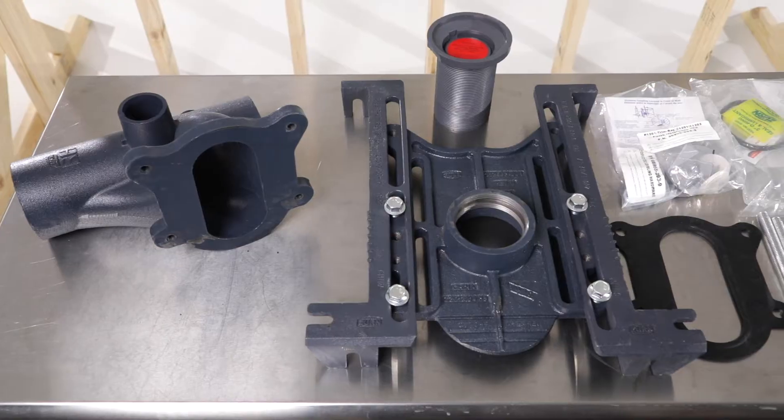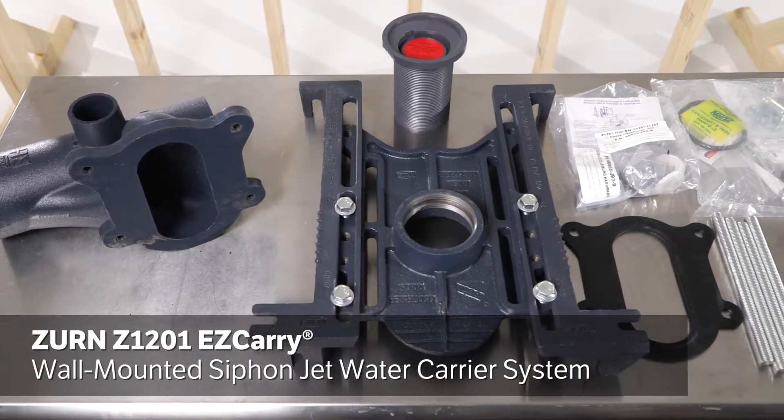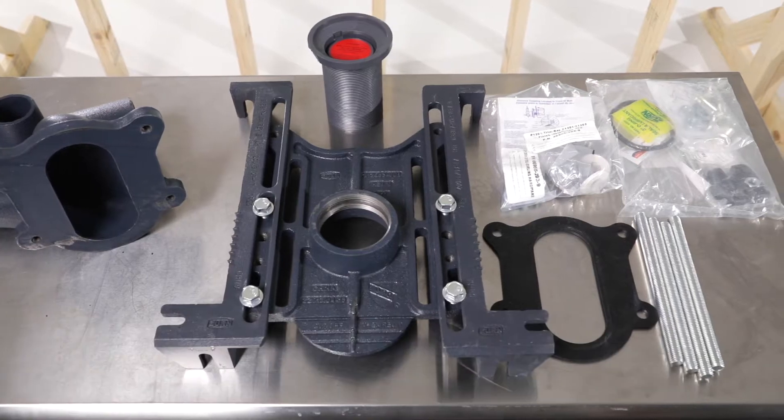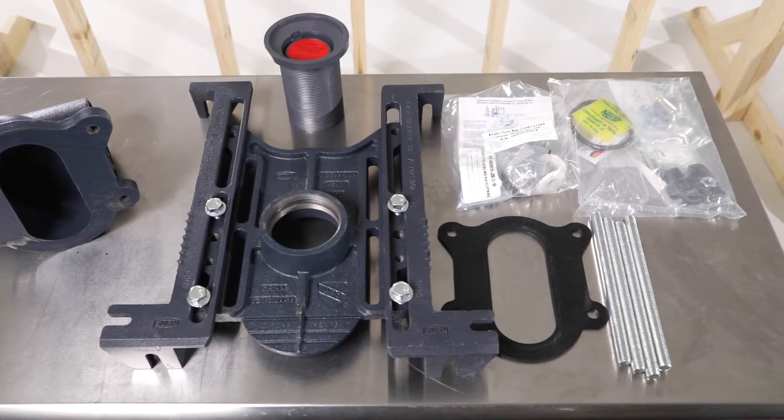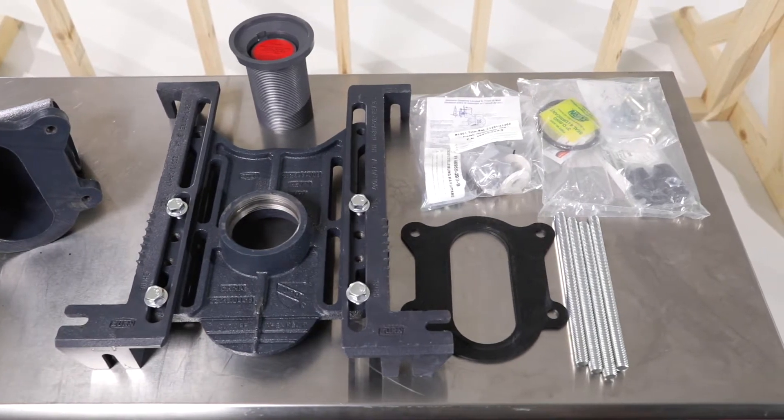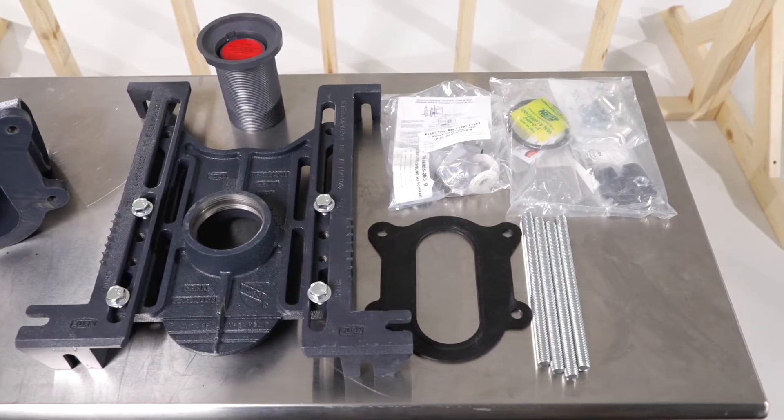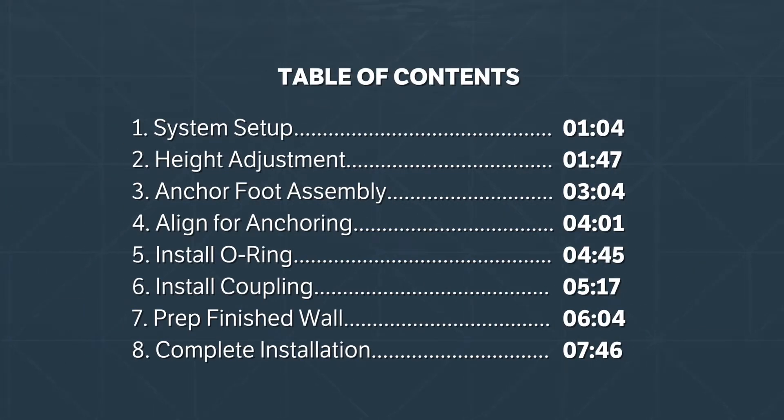The system includes a fitting with no-hub connections, adjustable faceplate, front leg supports, coupling gasket, rear anchor tie-down, and fixture mounting hardware. Anchors and no-hub coupling are not included. You can skip ahead or revisit a step at any time.